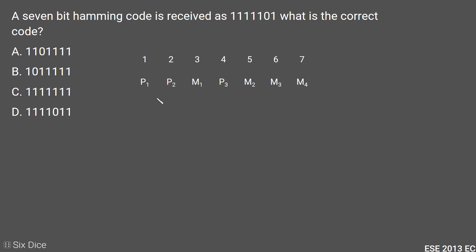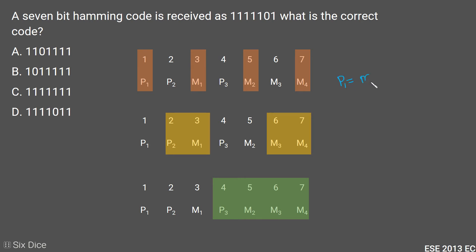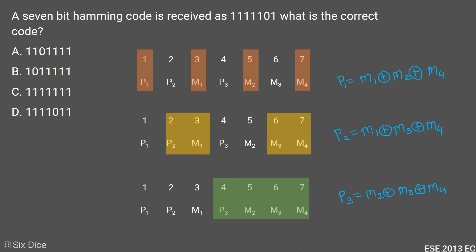Now we will see how to set our parity bits. Parity bit 1 is set using message bits 1, 3, and 4. Parity bit 2 is set using message bits 1, 3, and 4. Parity bit 3 is set using message bits 2, 3, and 4. Specifically, each parity bit is the XOR of its corresponding message bits.